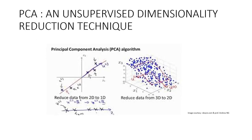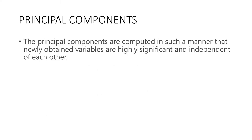Dimensions are nothing but features that represent the data. Now we will discuss what principal components are. We are transforming the variables or features or dimensions to a new set of variables which are known as the principal components, or simply the PCs. The principal components are computed in such a manner that the newly obtained variables are highly significant and independent of each other.